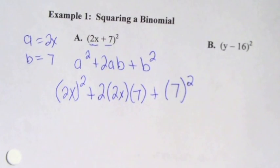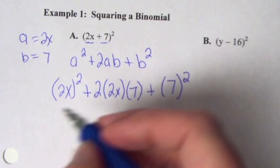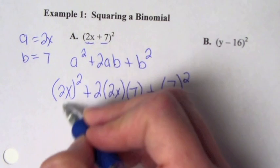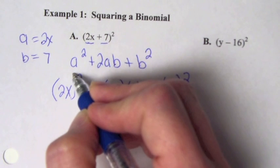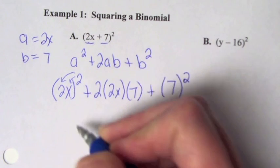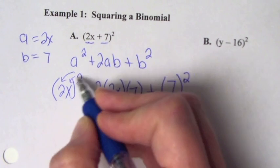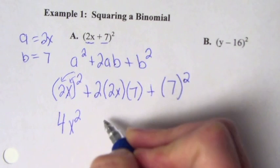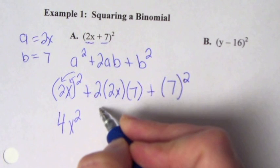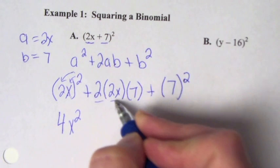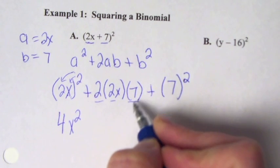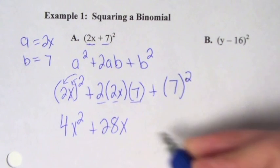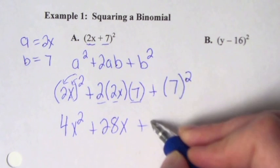Now we simplify. Remember our exponent rules: when we have something in parentheses squared, that exponent has to be distributed to both the 2 and the x. So that's 2 squared which is 4, times x squared. Then for the middle term, 2 times 2 is 4, and 4 times 7 is 28. So we get 4x squared plus 28x plus 49.